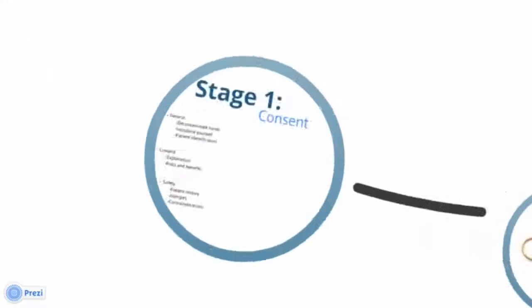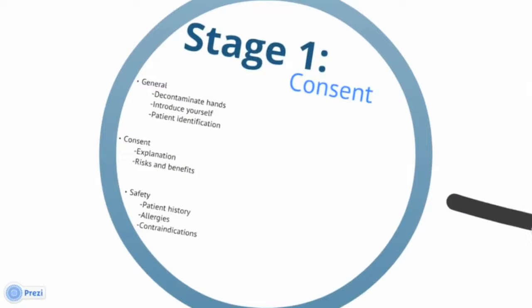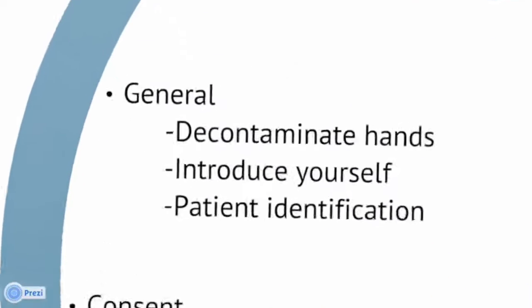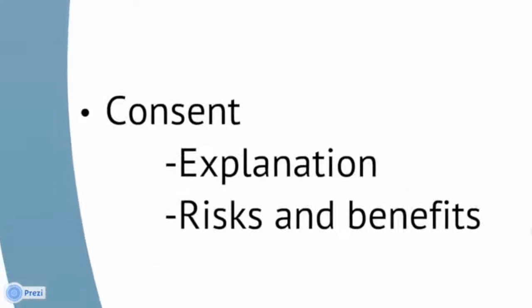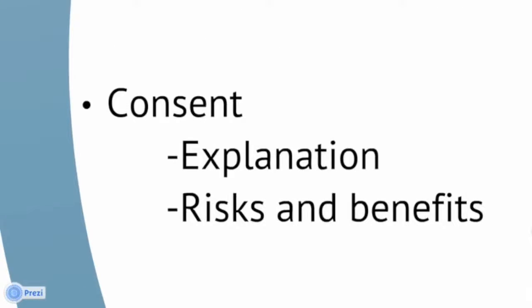Stage 1 involves obtaining consent from the patient. When you enter the patient environment you must decontaminate your hands, introduce yourself and identify the patient using name, date of birth and hospital number. This should be done by checking the patient wristband against an official hospital document such as the patient's notes. Once you have done this, move on to gaining informed consent. In order to do this, you should provide the patient with a simple explanation of what you are going to do and why.